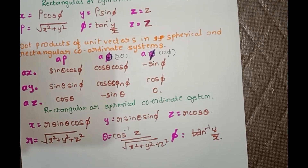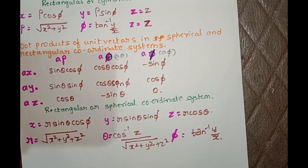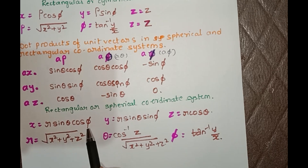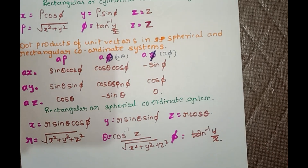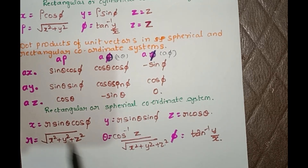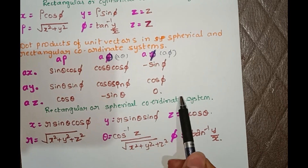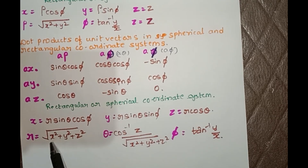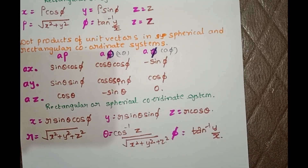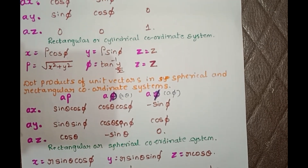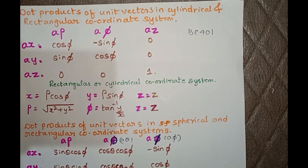Similarly, if the examiner gives values of r, θ, and φ, that is the spherical coordinate system. If you want to convert spherical coordinate system into Cartesian system, use the formula mentioned here — substitute the values of r, θ, and φ using sin and cos to get the x value, converting from spherical to Cartesian. Likewise, if x, y, z values are given, substituting gives the spherical coordinate system. Please try to make note of this in your notebook — this is very important.